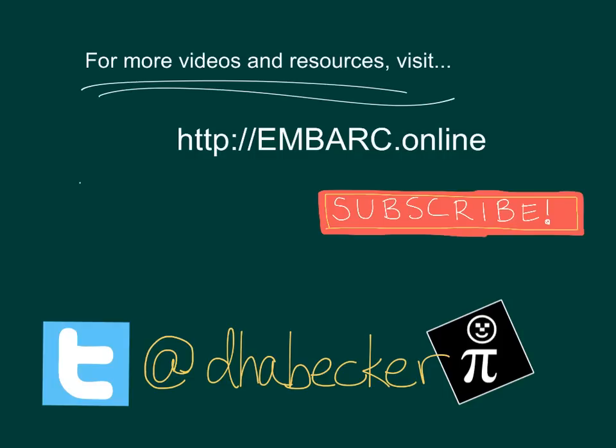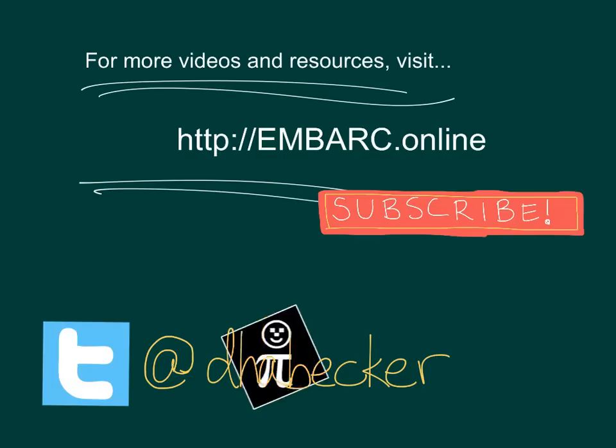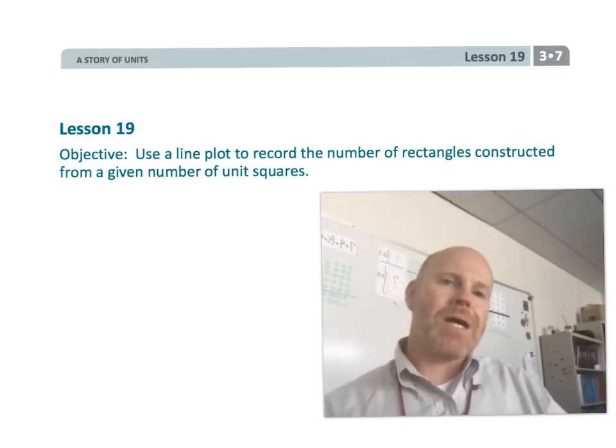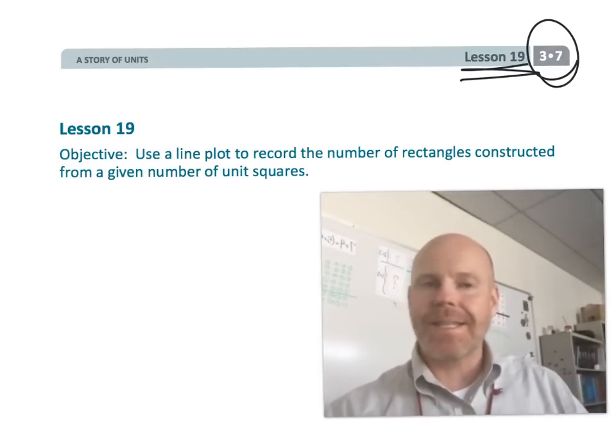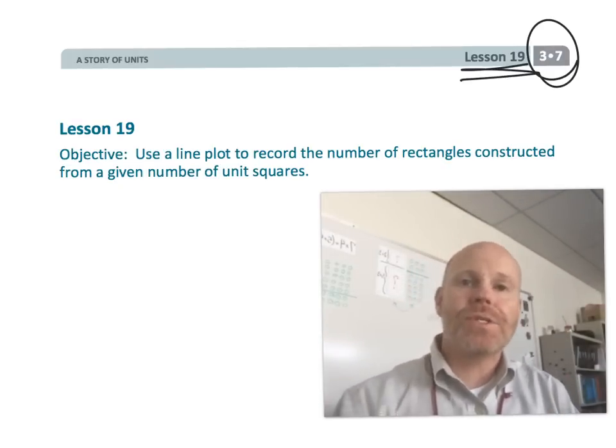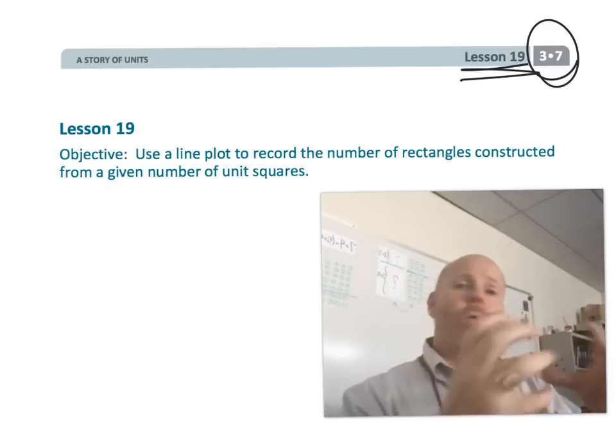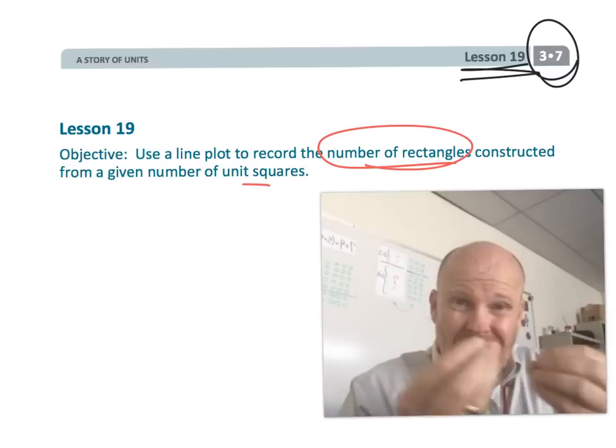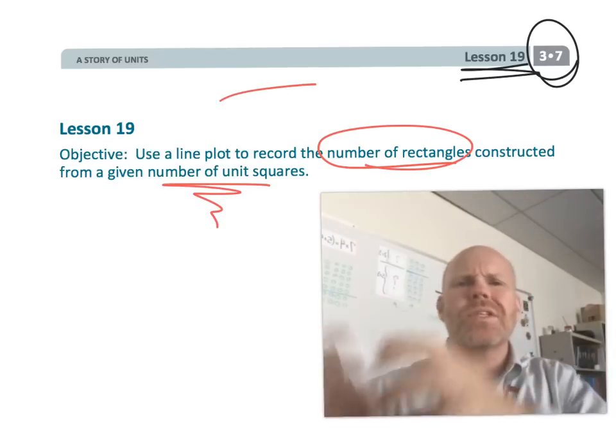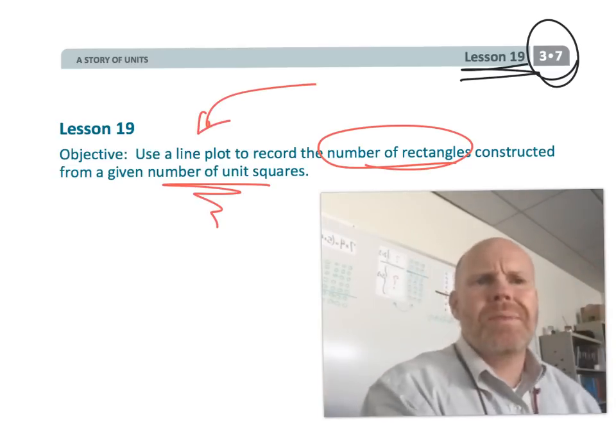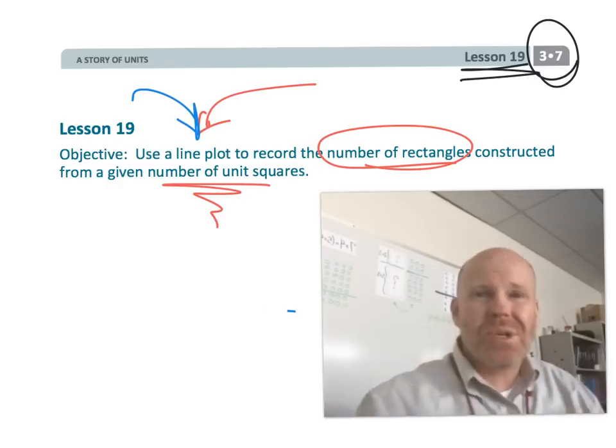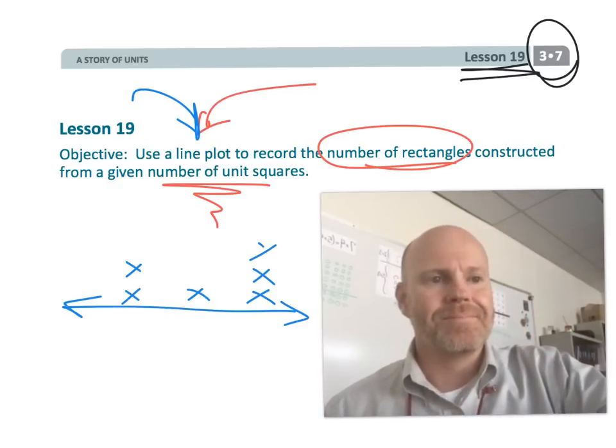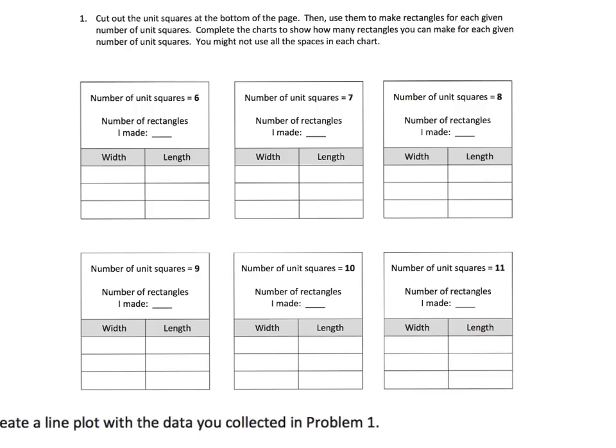All right, this is third grade module 7 lesson 19. In this lesson, students are going to continue using their multiplication facts to find a whole bunch of different rectangles given a certain number of area square units. Then they're going to record those in a chart and then they're going to record them in a line plot. We're kind of putting everything together in this lesson, so let's get started.